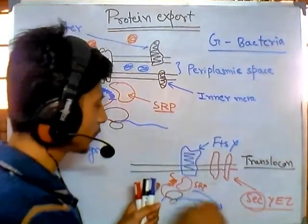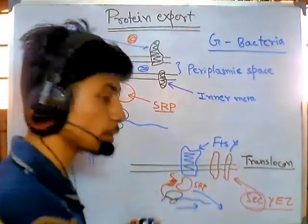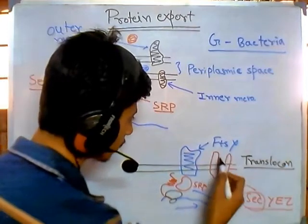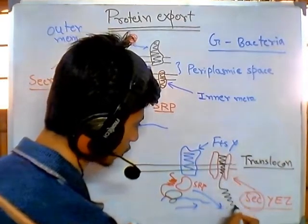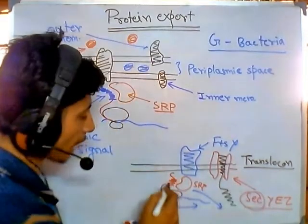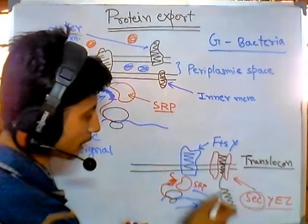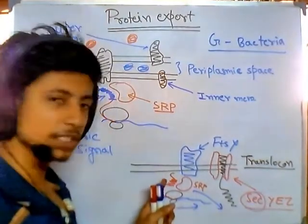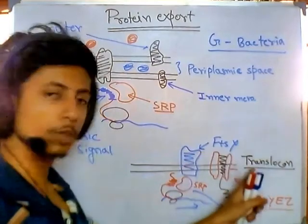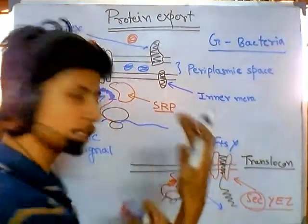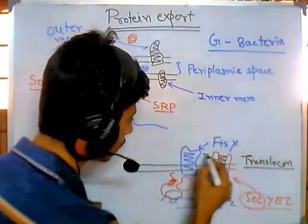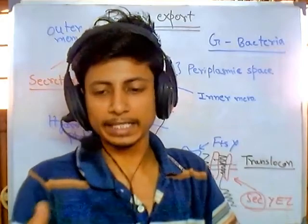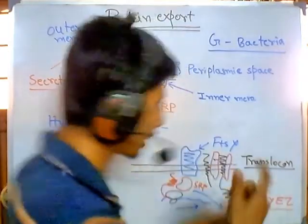The translocon channel's job is to embed membrane proteins into the cell membrane. Once SRP falls off and passes the polypeptide to FTSY, and then FTSY delivers it to the translocon channel, the translocon begins to act. As the protein is continuously being made with alternating hydrophobic and hydrophilic regions, the translocon grabs each hydrophobic stretch and inserts it into the inner cell membrane.